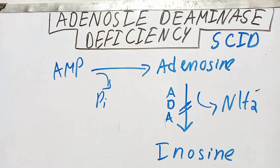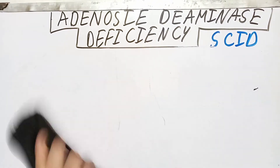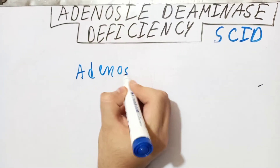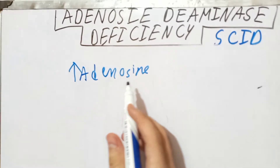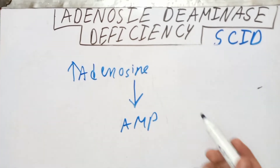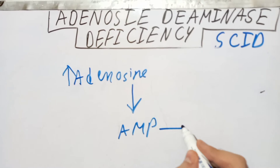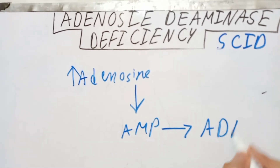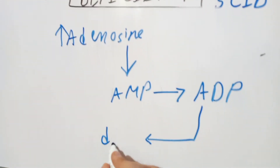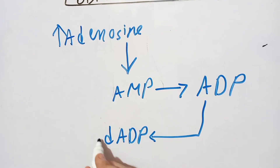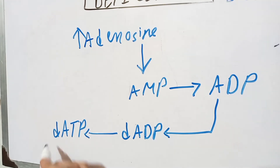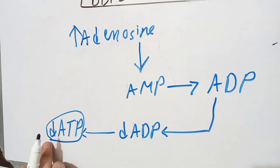If this enzyme is deficient in the body, adenosine will not be metabolized. When adenosine starts accumulating in body fluids, it will be phosphorylated to form adenosine monophosphate, which then leads to the formation of adenosine diphosphate. This adenosine diphosphate can be converted into deoxyadenosine diphosphate, which is then converted into deoxyadenosine triphosphate — this is the problem-causing product.